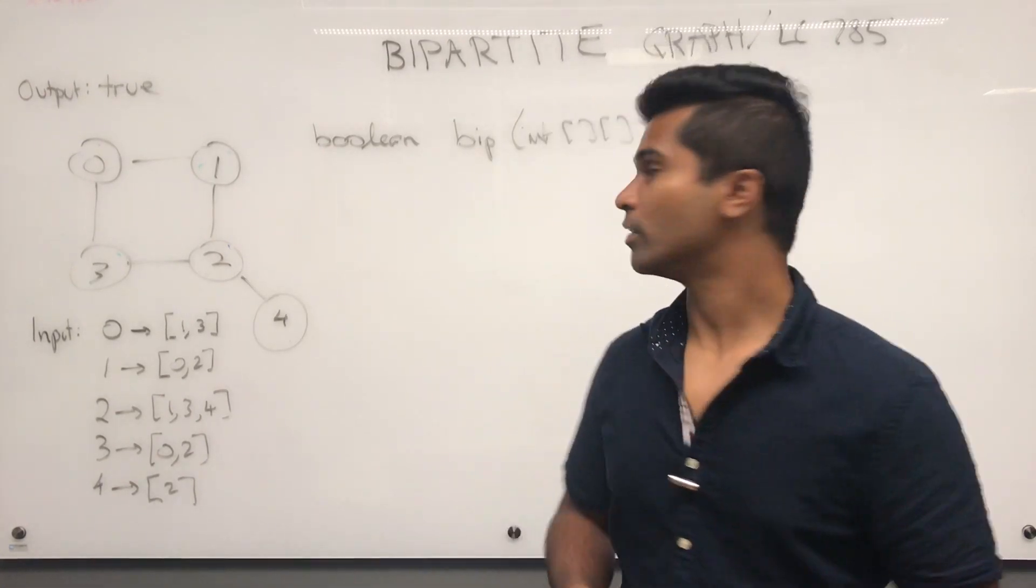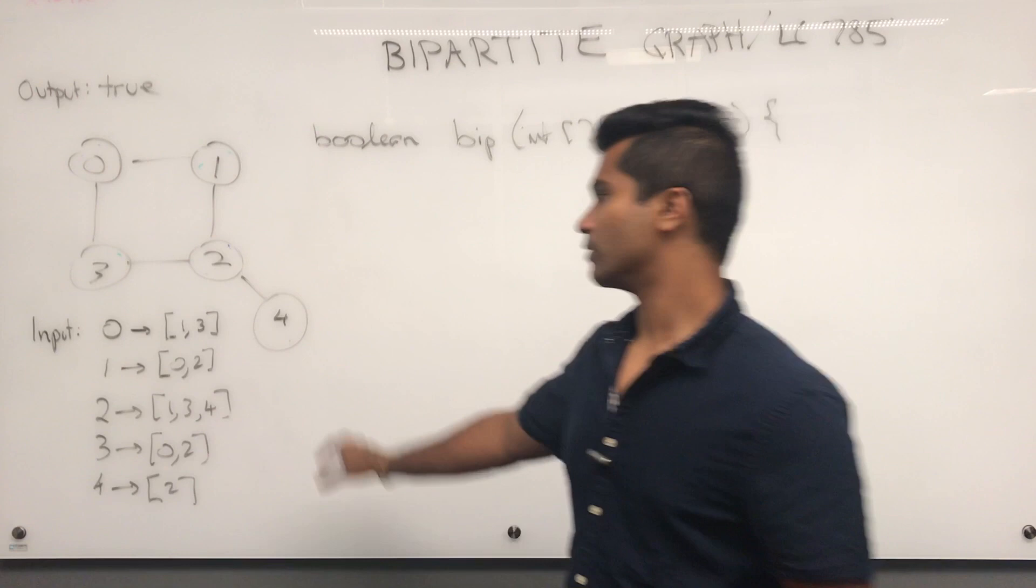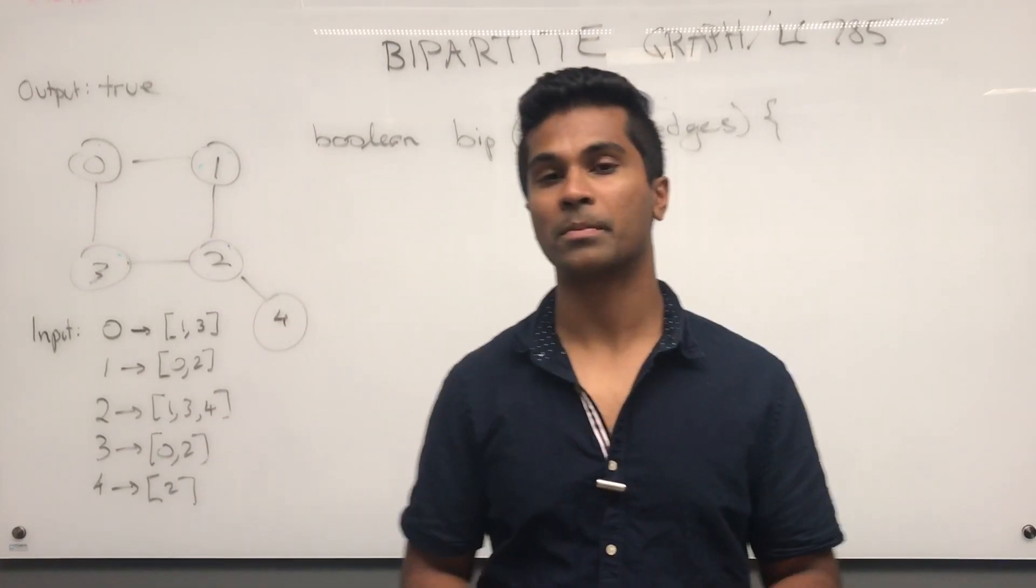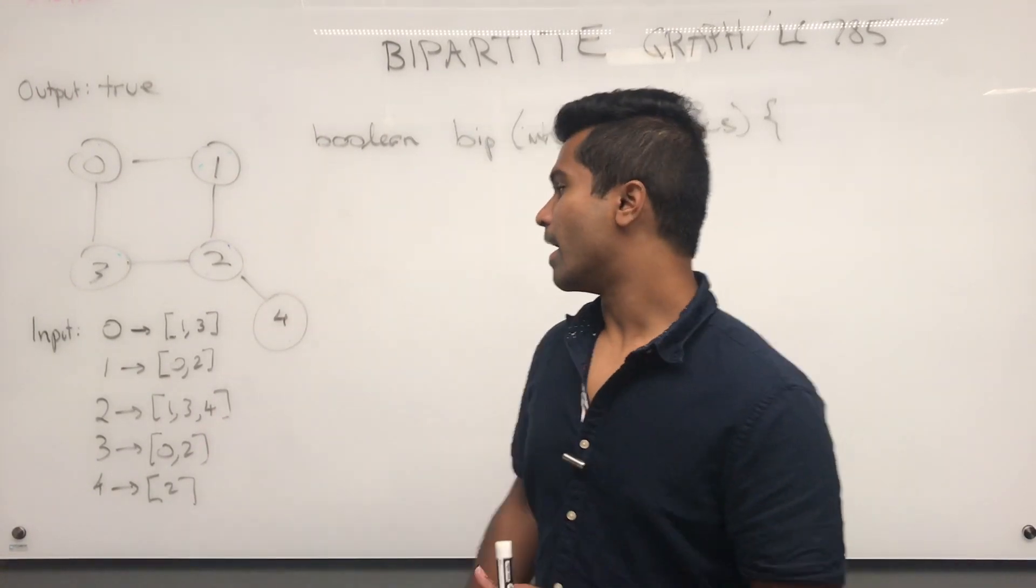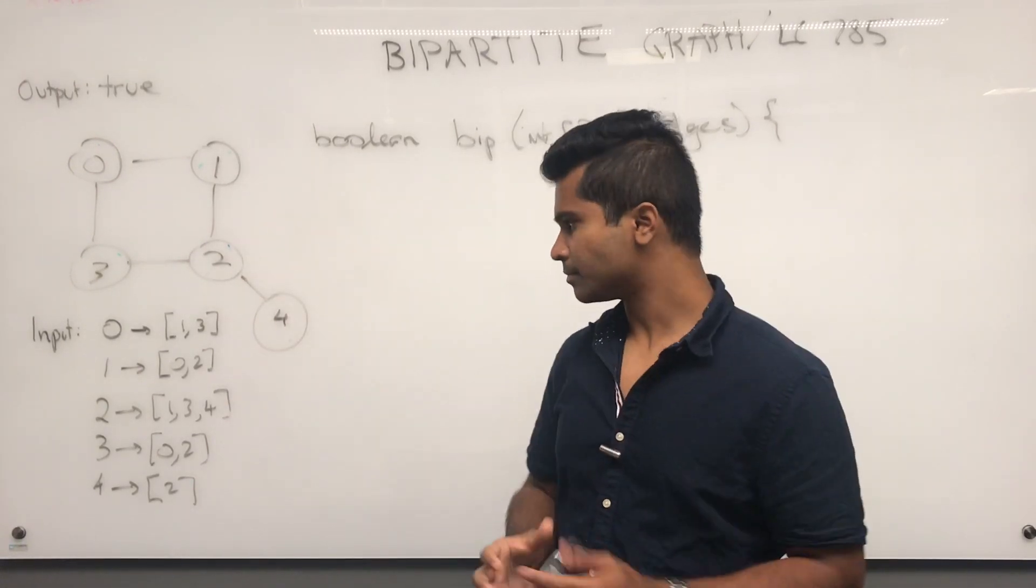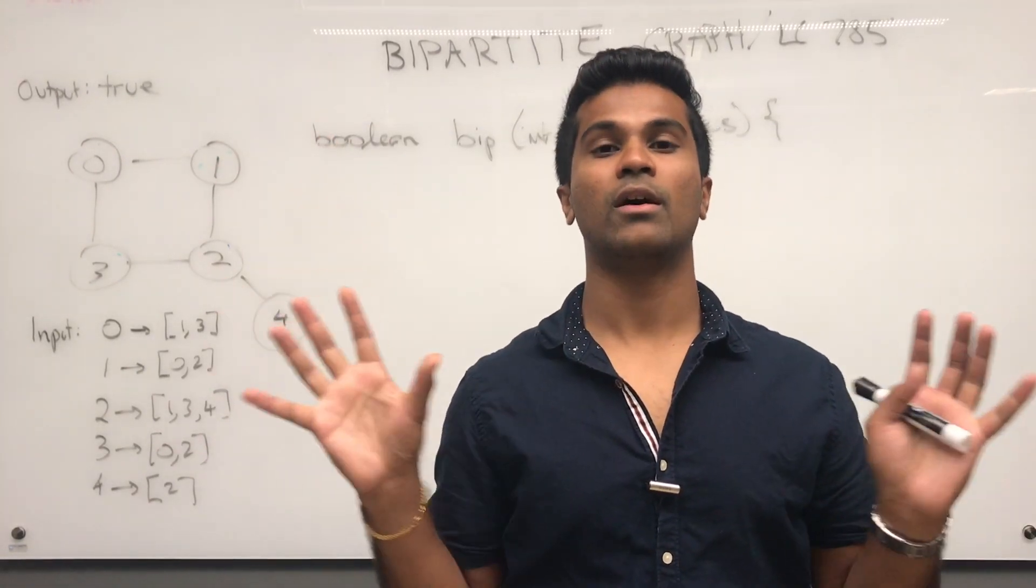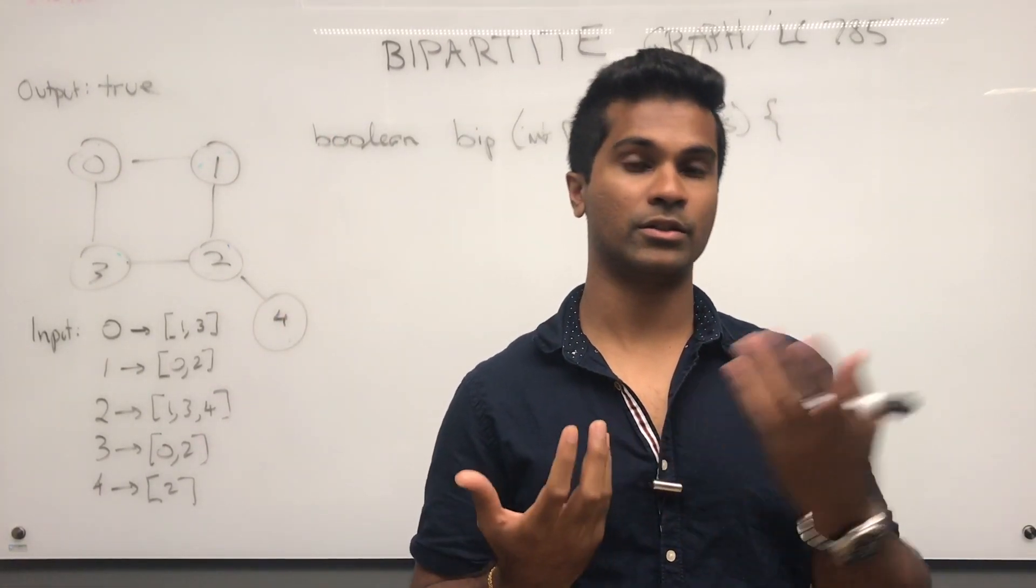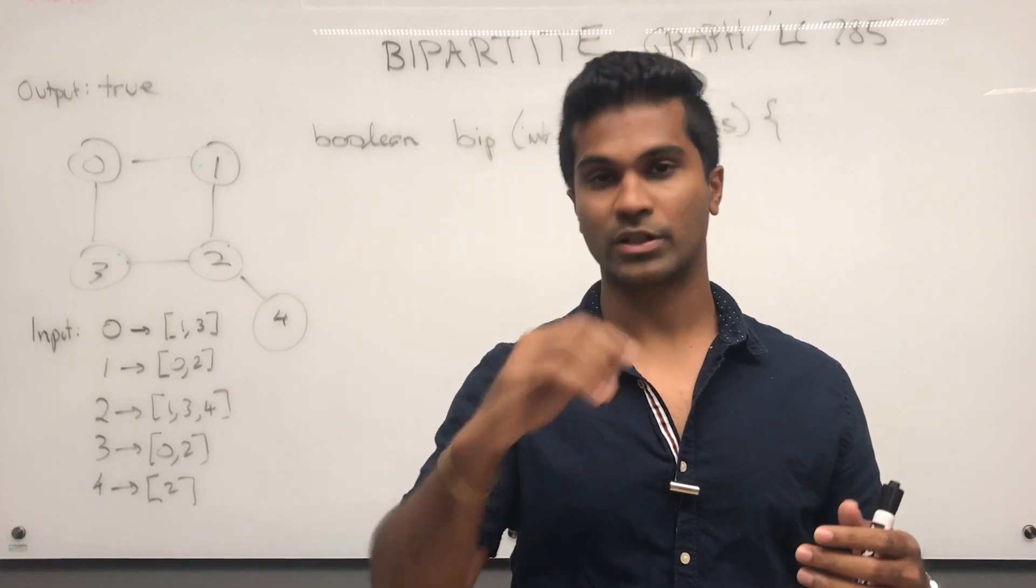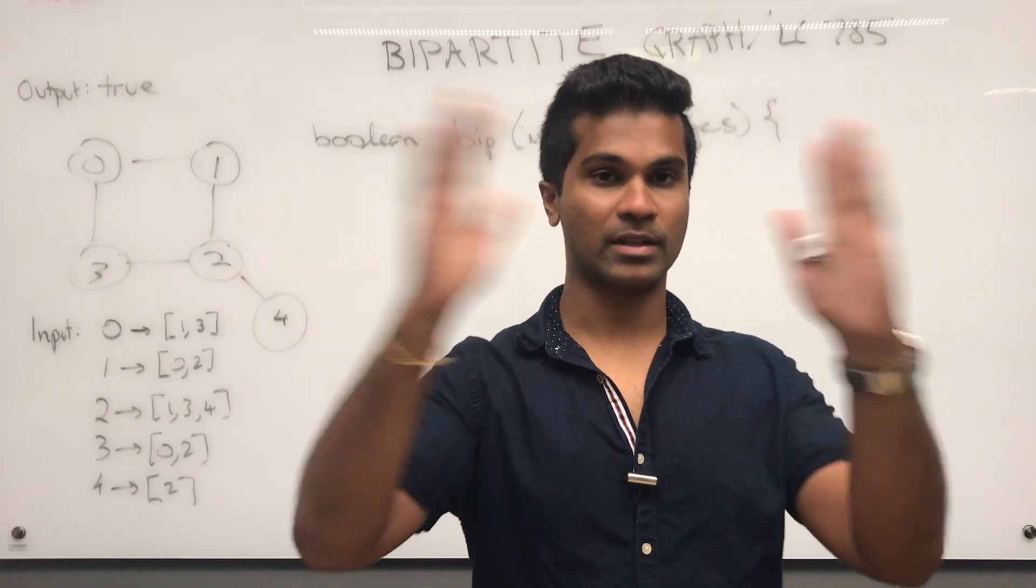What's up everyone? Today we're going to be going over Bipartite Graph, or LeetCode 785. Now the input is going to be a graph which may or may not be strongly connected, and the output needs to be true or false to see if we can make this graph bipartite. So what does bipartite mean? It means that we take all the nodes from the graph and they can be split into two separate sets, which the edges will go from one node to the other in separate sets.